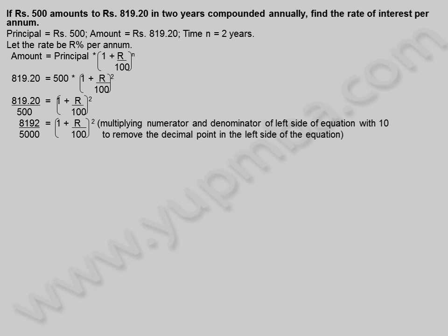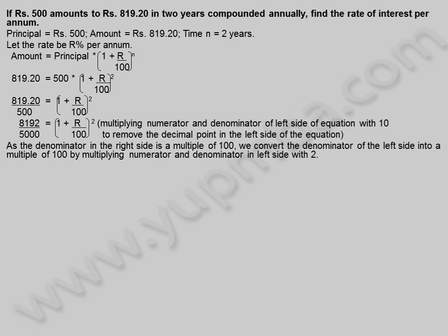Multiplying numerator and denominator of the left side of the equation with 10 to remove the decimal point. As the denominator on the right side is a multiple of 100, we convert the denominator of the left side into a multiple of 100 by multiplying numerator and denominator on the left side with 2. 16,384 by 10,000 is equal to 100 plus r divided by 100 whole square.